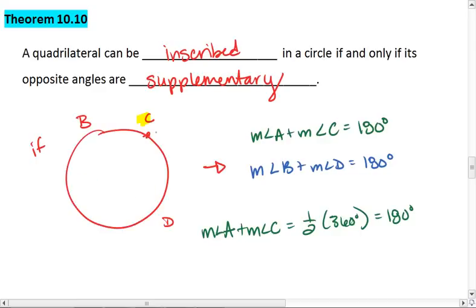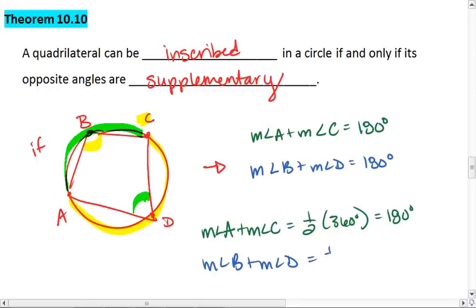We see a similar thing happen with B and D. So their measures together need to be half of a full circle. So the measure of B plus the measure of D needs to be half of 360, which is why it's 180.